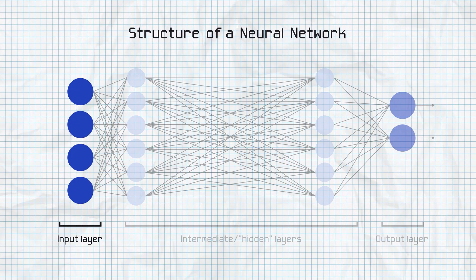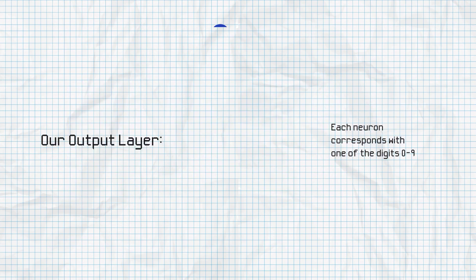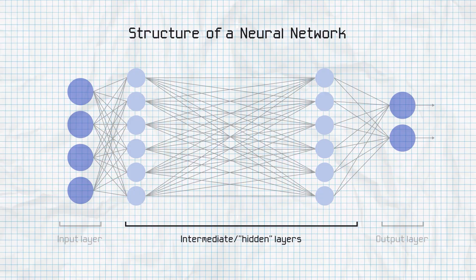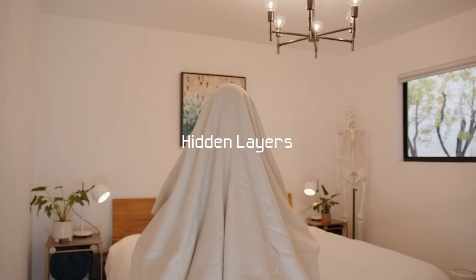This is where our neural network comes in. At the start, you have the input layer, which in our case would be each pixel in our six. Then at the end, you have the output layer, which for us would be each of the digits zero through nine. Our hope is that once we reach the output layer, the neuron with the highest number will correspond with the correct digit. But what's going on in the middle? Those are called intermediate, or hidden layers.